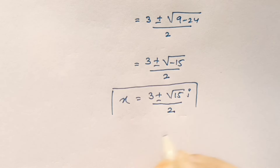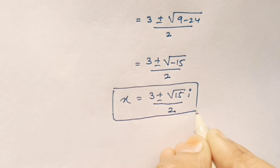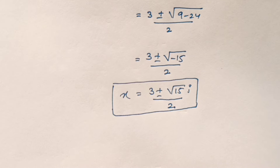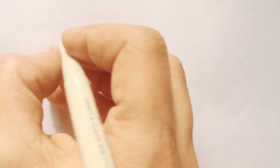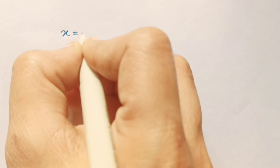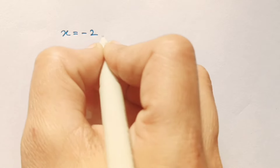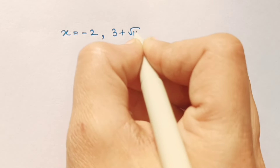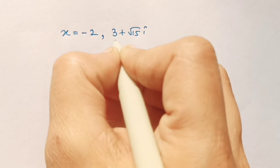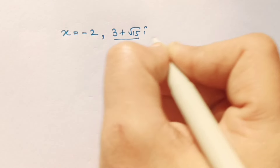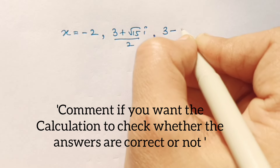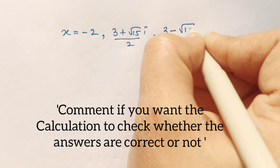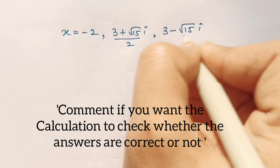Finally we got 2 other values of x. Let's write our final answer. We got 3 values of x: x equals minus 2, x equals 3 plus root 15 i divided by 2, and x equals 3 minus root 15 i divided by 2.